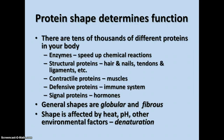The shape of a protein determines its function. There are literally tens of thousands of different proteins in your body, and they fall into several categories. There are enzymes that speed up chemical reactions. There are structural proteins that make up parts of your body — your hair and nails, tendons and ligaments, connective tissue.